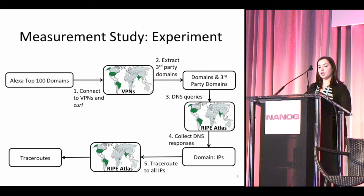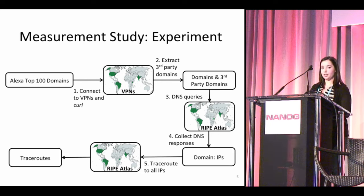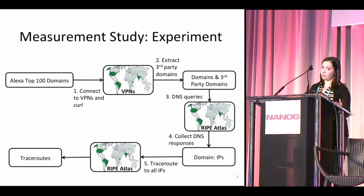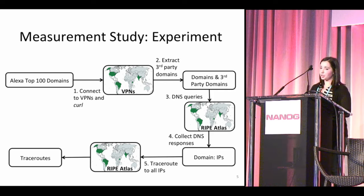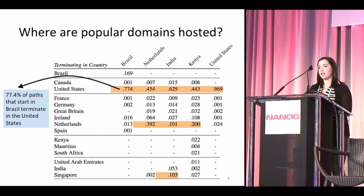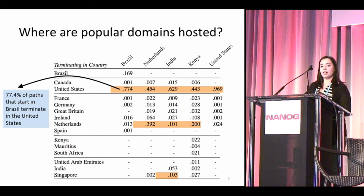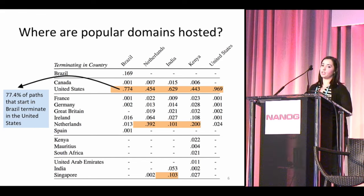From there, we used RIPE Atlas to conduct local DNS queries. We used about 20 different probes in each of the five countries, which gave us a set of IP addresses and a mapping of domain to IPs. The next step was using those same probes to run traceroutes to these IP addresses. This left us with a set of traceroutes, which we cleaned up and mapped to the country level using a geolocation service, resulting in a set of country-level paths for analysis.